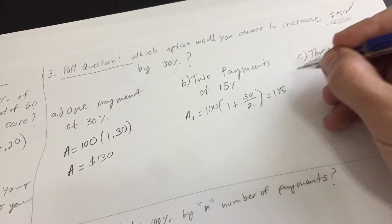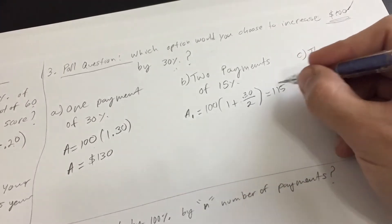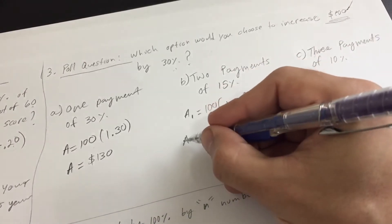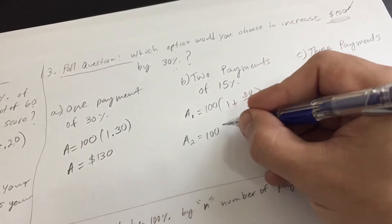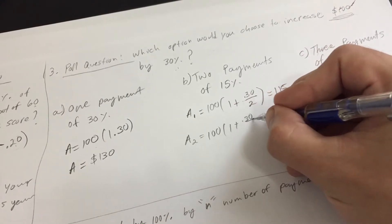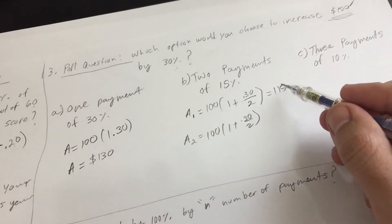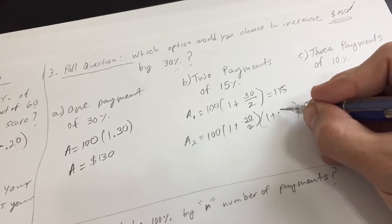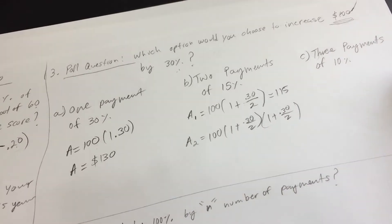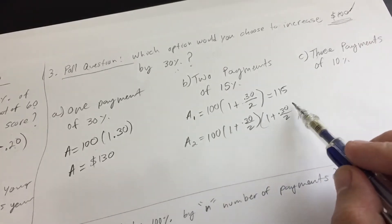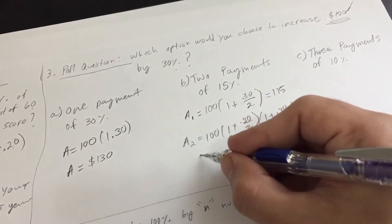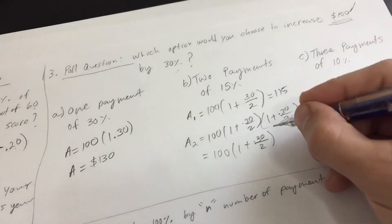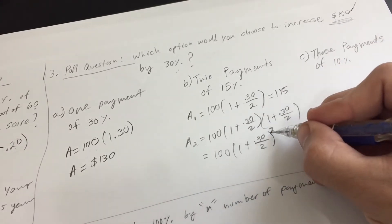The first amount is $115. Now we take that $115 and apply another 15% to it. So the second amount equals 115 times 1.15 — but notice that 115 is itself 100 times 1.15, so this expression becomes 100 times (1.15) squared — multiplied by that factor twice.